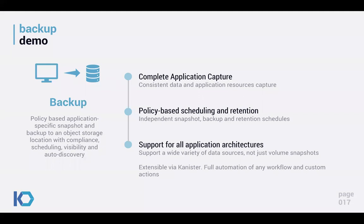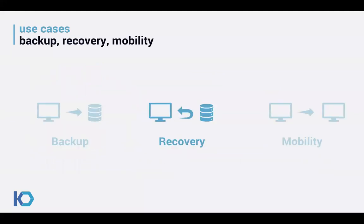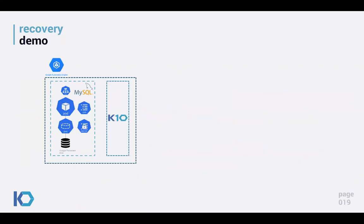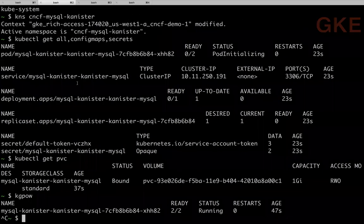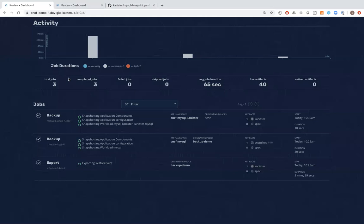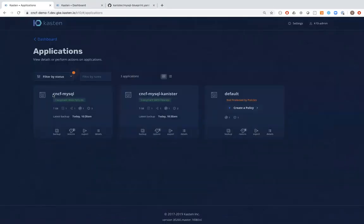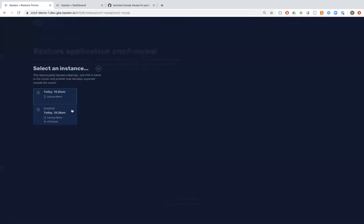Now let's talk about recovery. I'll demonstrate on the same cluster. We have MySQL installed with K10, and I'll pull a restore point from object storage and restore the application in-place. We'll repave the infrastructure — remove the existing application and replace it with a version from a previous point in time. Going to Applications and looking at the original MySQL application's restore points.